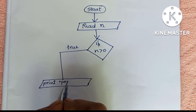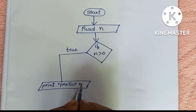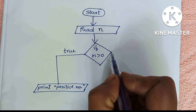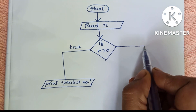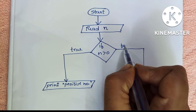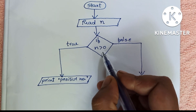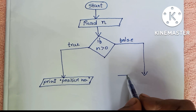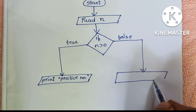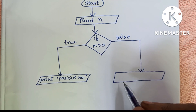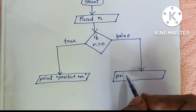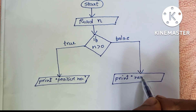If N greater than zero is false, it means the number is a negative number, and it will display: the number is a negative number. Output is declared inside a parallelogram shape, so we draw a parallelogram and print: negative number.